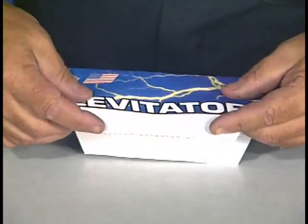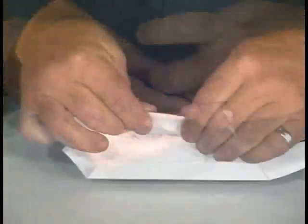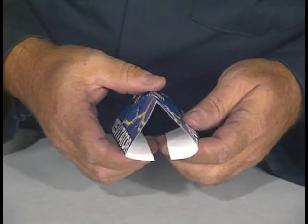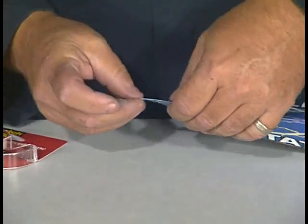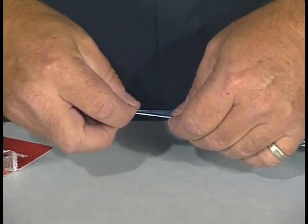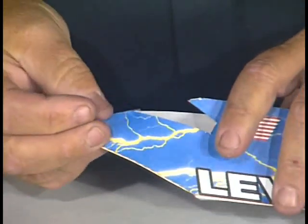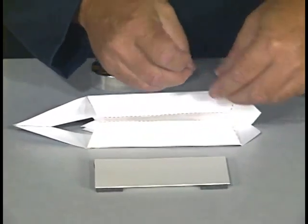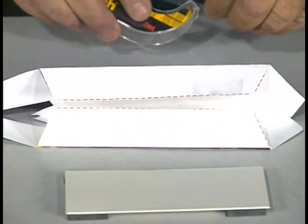Fold the white flaps at the red solid lines inward like this. Use cellophane tape and tape the nose of the car together. Use double stick tape on the bottom of the white flaps to attach the car to the piece of cardstock with the magnets attached.